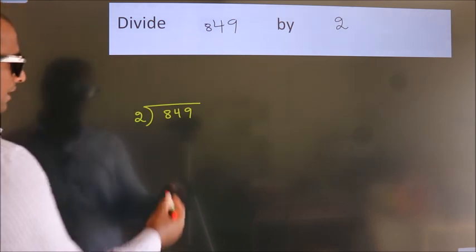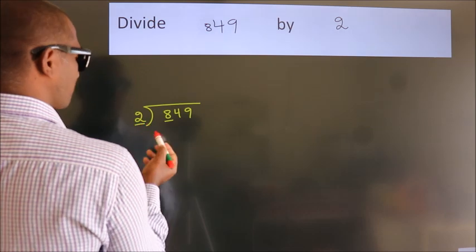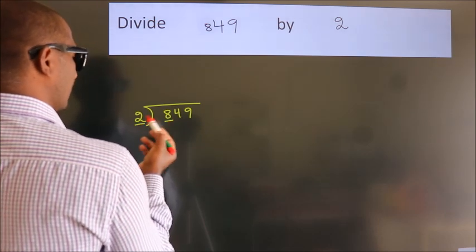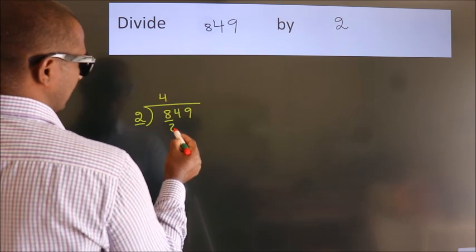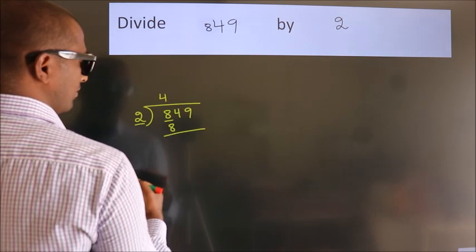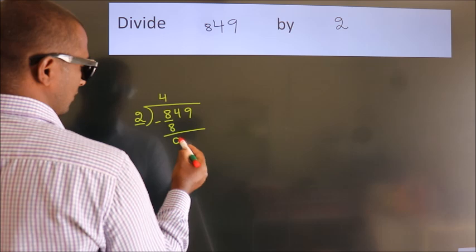Next, here we have 8, here 2. When do we get 8 in the 2 table? 2 4s 8. Now we subtract, we get 0.